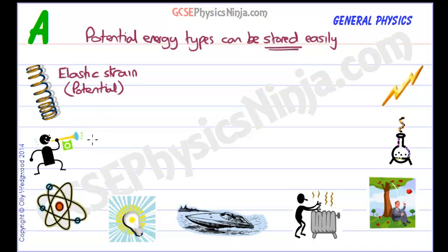This guy blowing a trumpet is producing a lot of sound energy. Sound energy is the vibration of air molecules passing on their vibrations to their neighbor and so on until it reaches your ear. So you could say that sound energy is actually a type of movement energy.